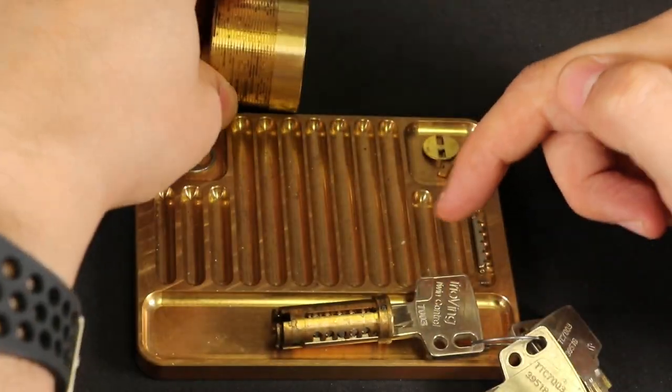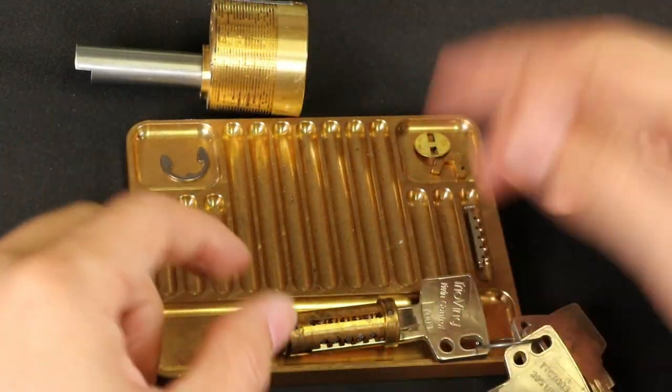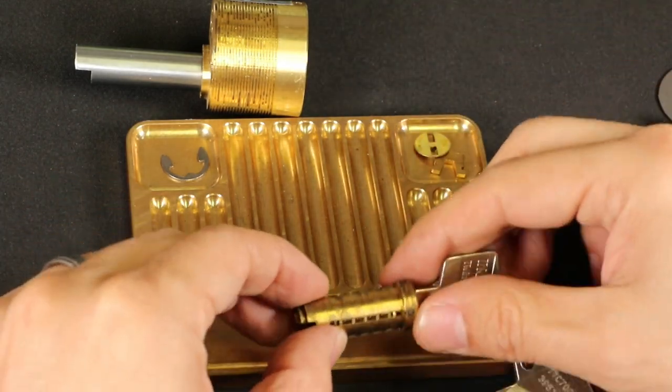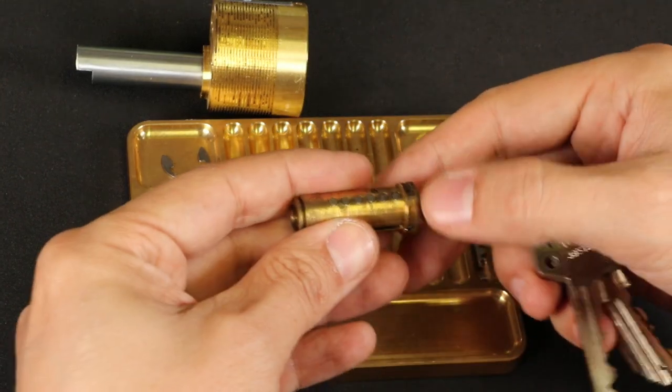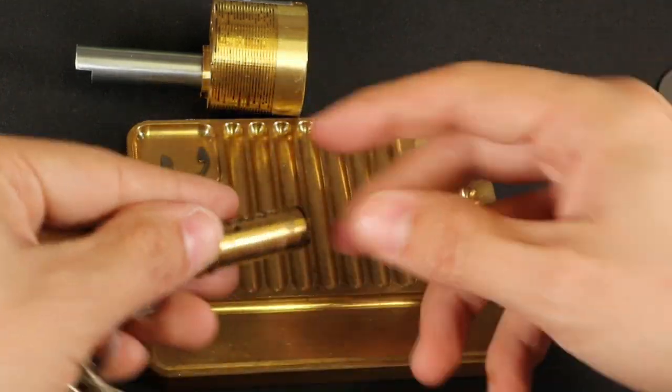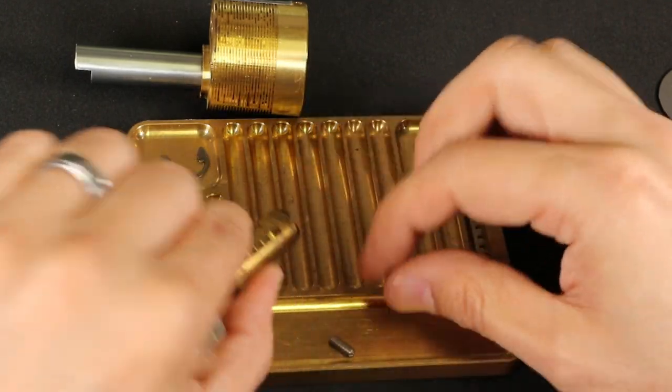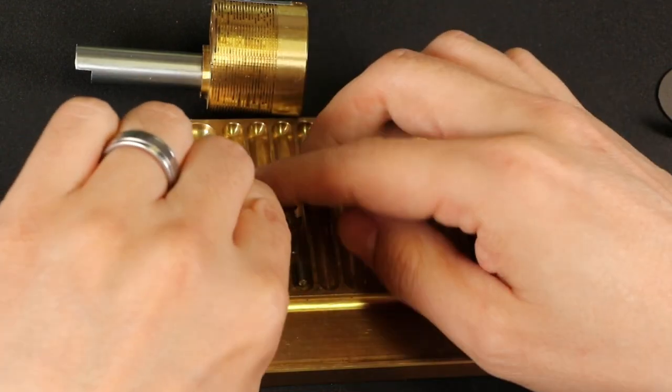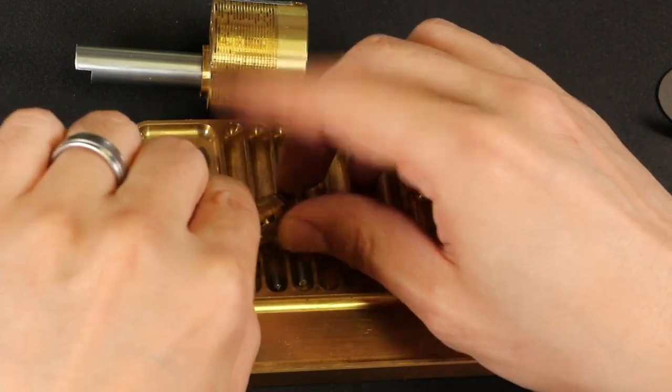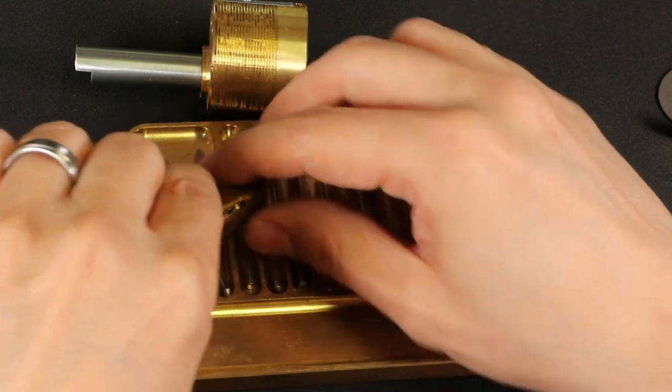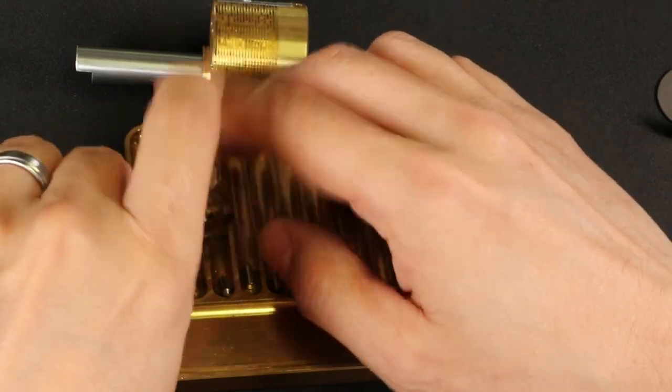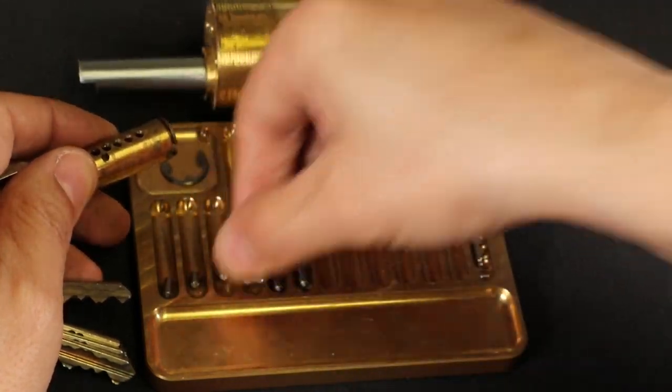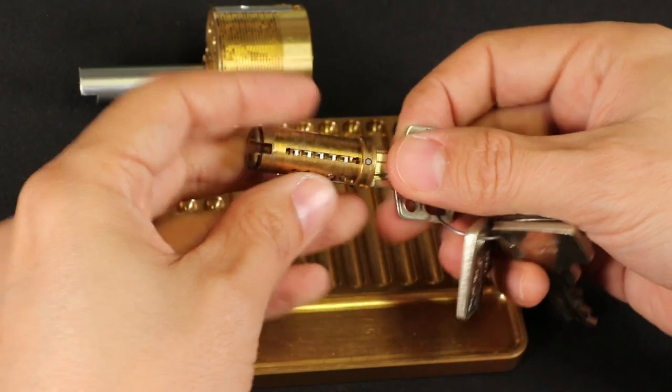So what we'll do is we'll get rid of the key pins first. And I'm curious to see if they have any special shape. I don't think they do. They do not. So nothing special there. Six, five, four, three, two, one. There's our key pins. Flip them around the right way. And then we'll take a look at the side pins.